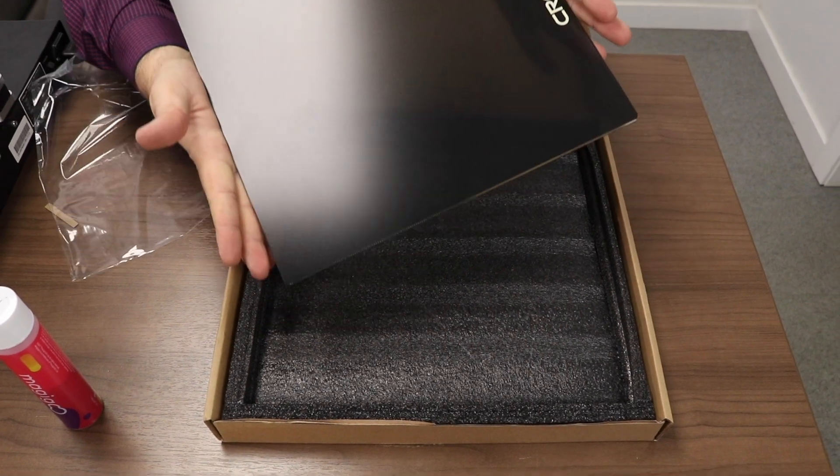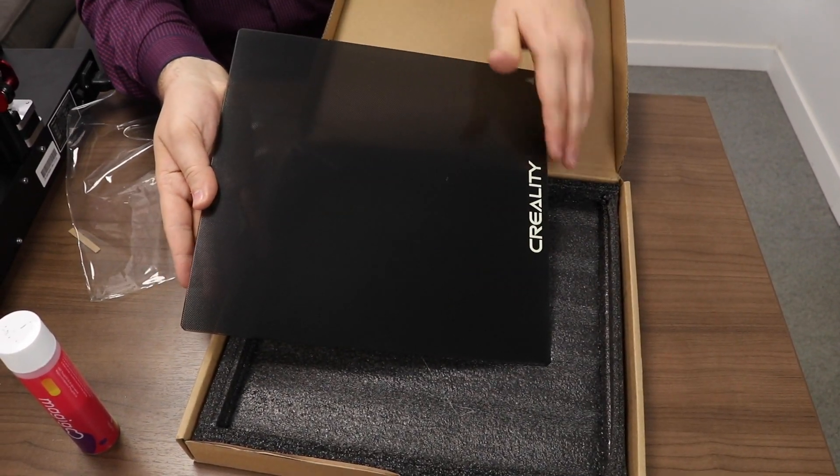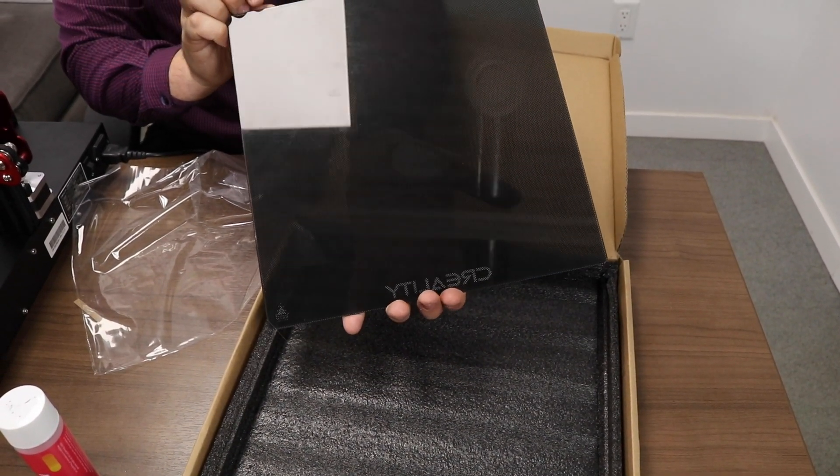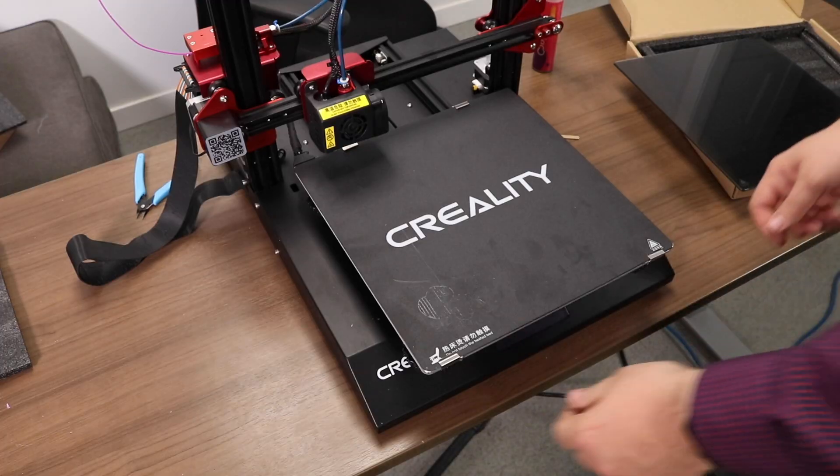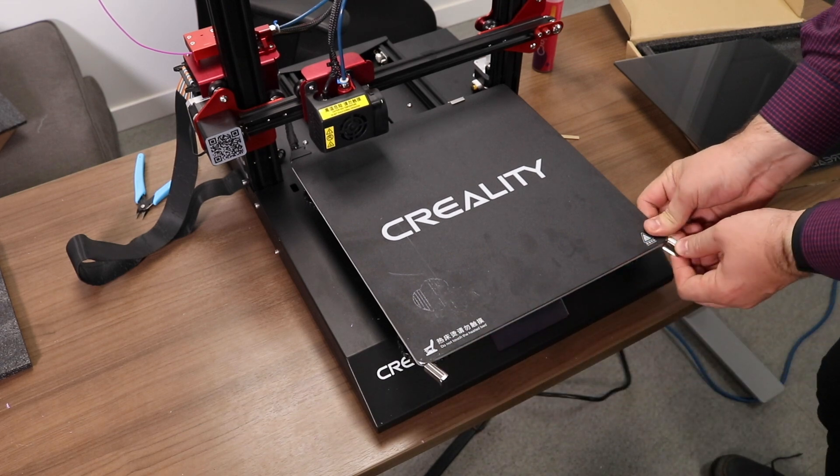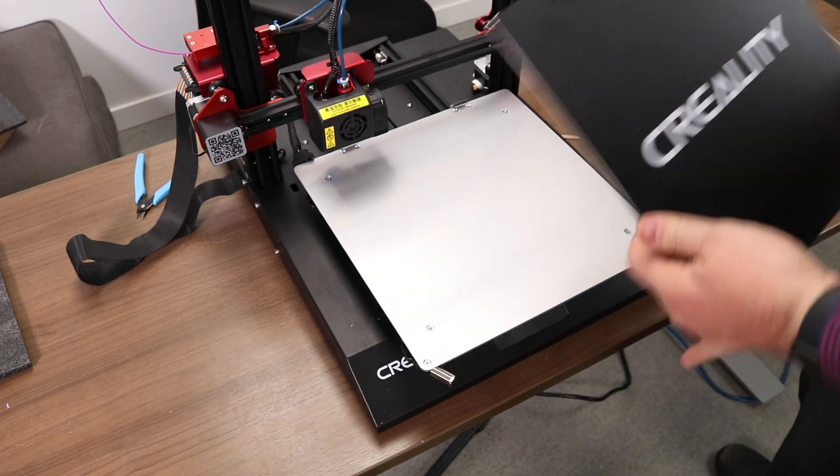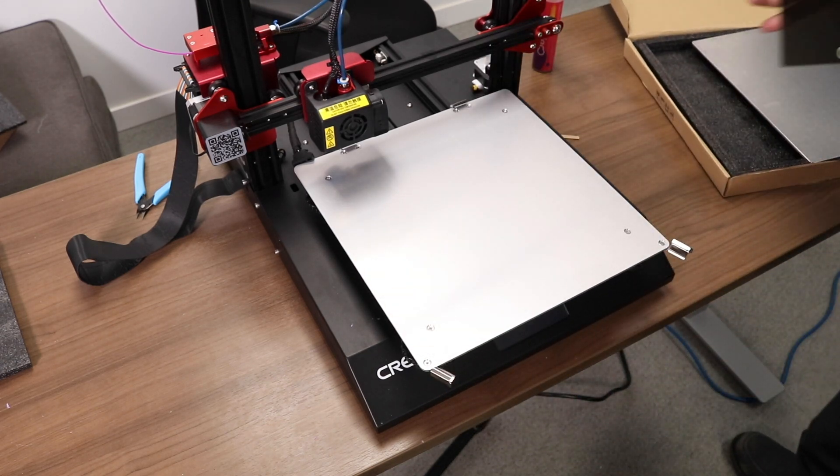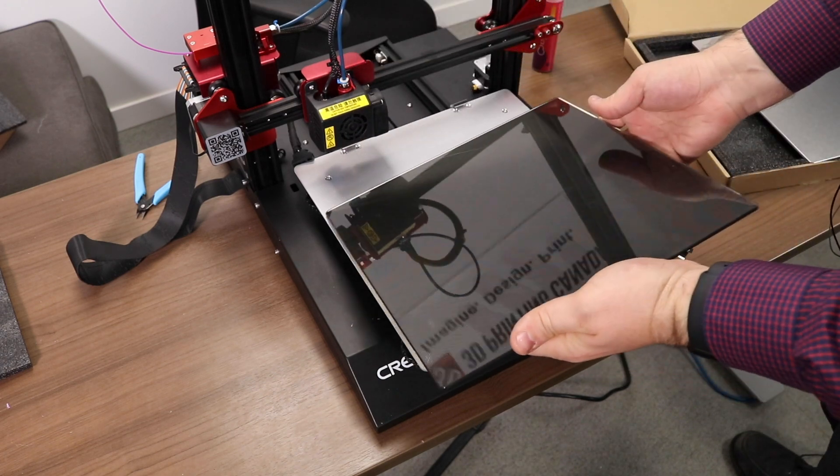On one side of the glass, you have a matte, textured surface that can hold onto prints. On the other side, we have pure, clean, flat glass, which is what we're going to be using today in conjunction with the Magigoo. To install the glass plate, simply remove the two front clips holding in the original aluminum plate. Once they are delatched, you can remove the plate easily. Then, simply take the Creality Glass and put it back into place. We're putting it with the matte side down, shiny side up.